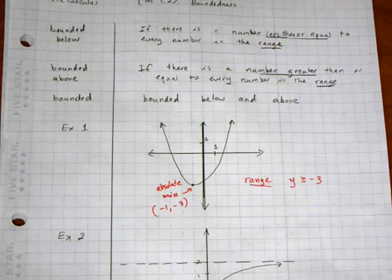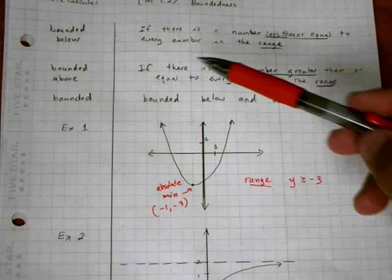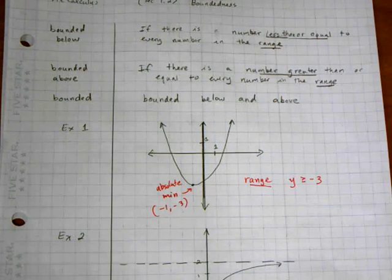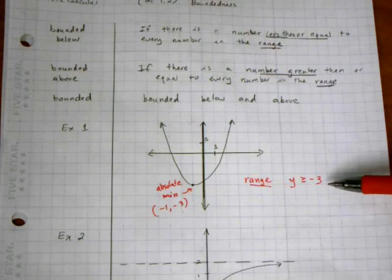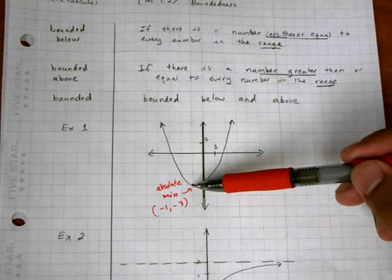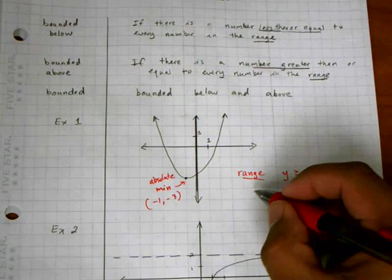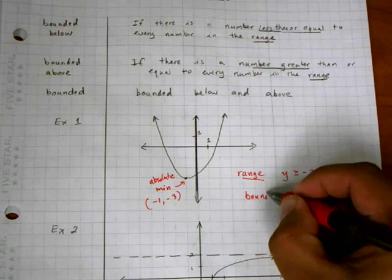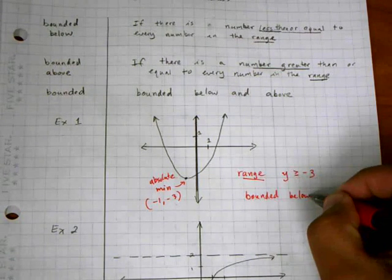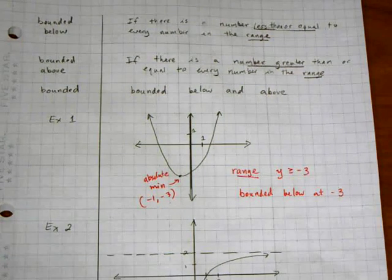We can say the range of this function is y greater than or equal to negative three. Going back to the definition, if there is a number less than or equal to every number in the range, then it is bounded below. In this case, negative three is less than or equal to every single number in the range — the graph never goes below y equals negative three — so this function is bounded below at negative three.